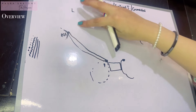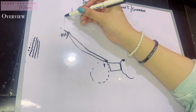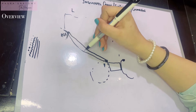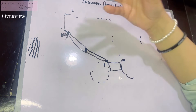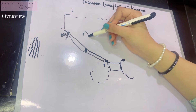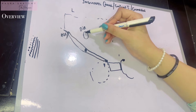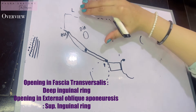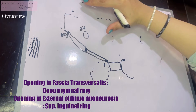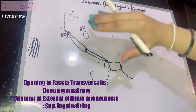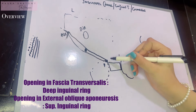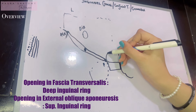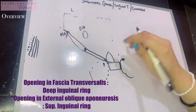Now let's talk about what occurs above the inguinal ligament, starting from the deep layer — the fascia transversalis. About 1.2 centimeters above the mid-inguinal point was an important structure called the deep inguinal ring, basically a defect or opening in the fascia transversalis. Bringing all the layers on top: transversus abdominis, then internal oblique, then the external oblique — the most superficial layer had the superficial inguinal ring, just above the pubic crest, a triangular opening.